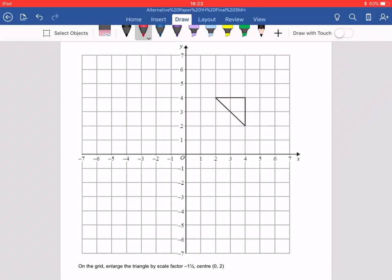Ah, I just noticed this 1.5. Is that why you wanted me to do it? Yeah. Ah, you chief. I'm not allowed to say that. All right, let's have a look. On the grid, enlarge the triangle by the scale factor minus the half, centre 0, 2.